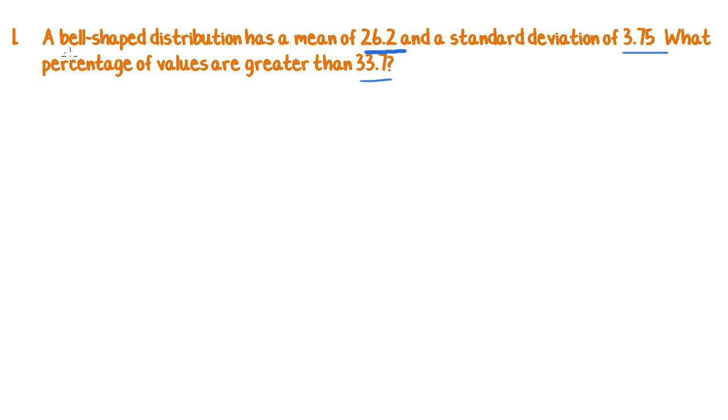I've noticed the words bell-shaped distribution, which would be the first thing I'd watch out for in an exam or in a test, and so I'm just going to draw myself a quick bell curve and draw what they've described here. So it has a mean of 26.2 and we have a standard deviation of 3.75. So that's how far I'm going to travel in each direction.